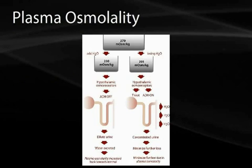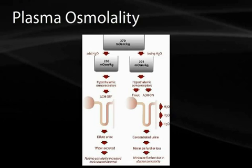Starting with a normal plasma osmolality of 270 mOsm/kg: if we add water, osmolality falls. This fall is sensed by the hypothalamic osmoreceptors, turning ADH off. Decreased ADH activity makes the collecting duct impermeable to water — water cannot be reabsorbed, dilute urine is created, more free water is excreted, and plasma osmolality is restored to normal.